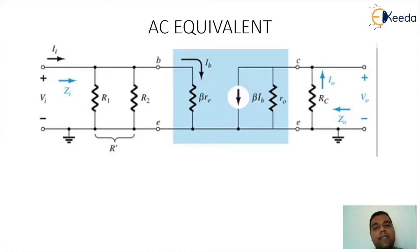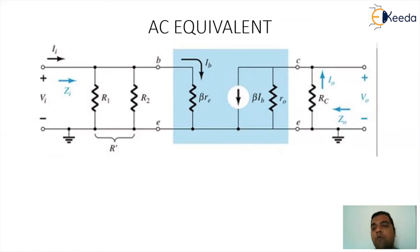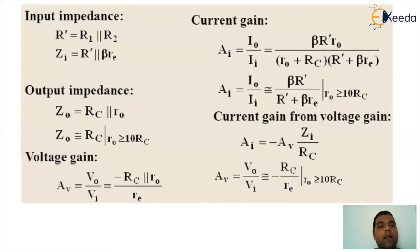The AC equivalent circuitry has beta·RE, beta·IB, and RO representing the device equivalent. RC is on the output side, R1 and R2 are on the input side, with VI as input voltage and VO as output voltage. Input current is II, input impedance is ZI, output current is IO, and output impedance is ZO. R1 and R2 in parallel are combined into a new element R' (also noted as RB in many books). The ZI value is R' parallel with beta·RE.